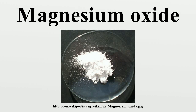Magnesium oxide, or magnesia, is a white hygroscopic solid mineral that occurs naturally as periclase and is a source of magnesium. It has an empirical formula of MgO and consists of a lattice of Mg2+ ions and O2− ions held together by ionic bonding.